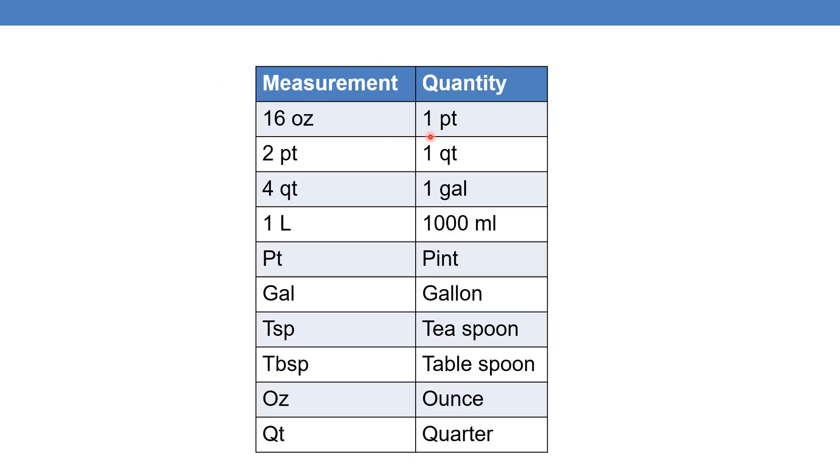16 ounce will be equal to 1 pint, whereas 2 pints will be equal to 1 quarter. Qt means quarter, and 4 quarters will equal to 1 gallon. 1 liter is equal to 1000 ml.